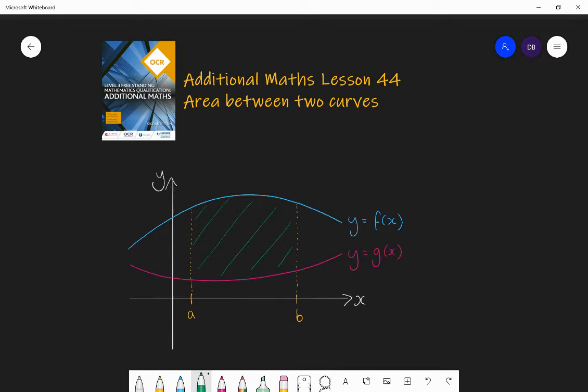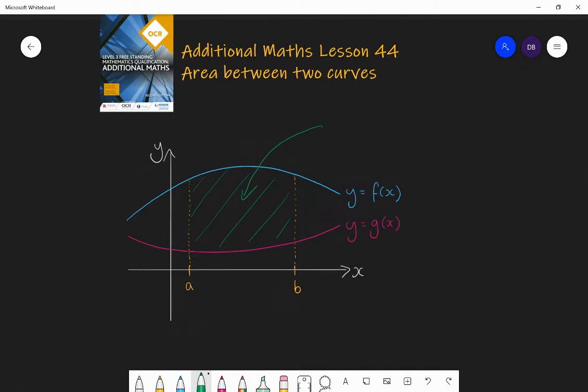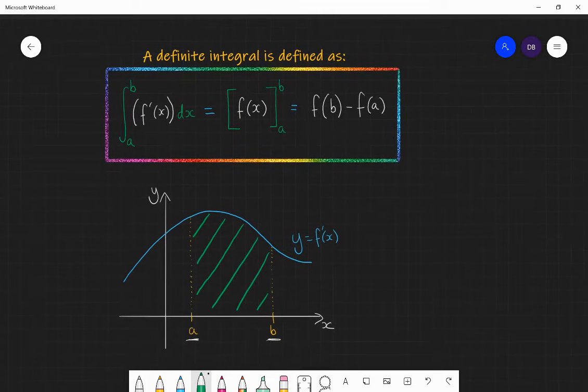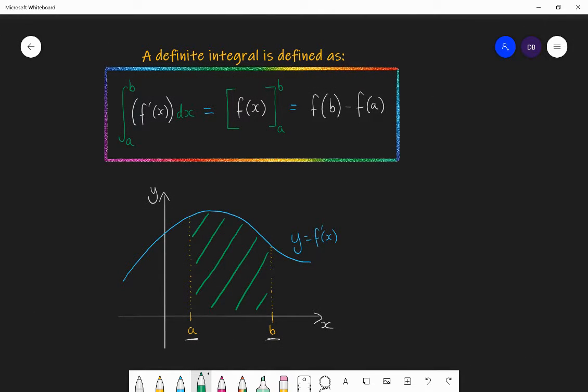So we're going to be looking at questions where we need to find the area contained between the two curves y equals f of x and y equals g of x, and between the limits x equals A and x equals B. From before we know the process of finding the area between a curve and the x-axis uses definite integration where you integrate the function between two limits, and then substitute those two limits in and subtract, and that gives you the area.